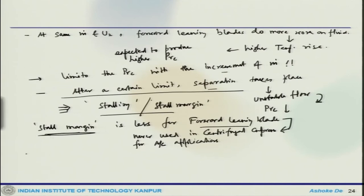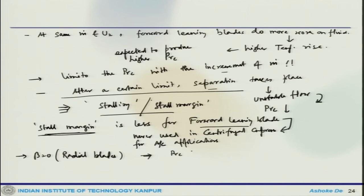For radial blades where beta is 0, one can see that PRC is independent of mass flow rate.